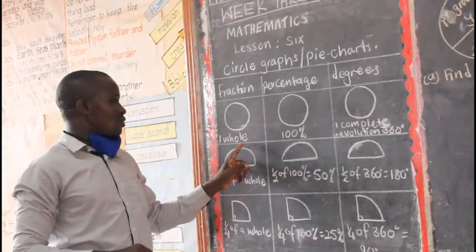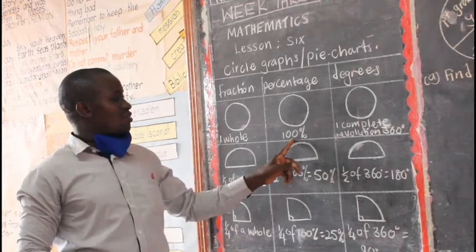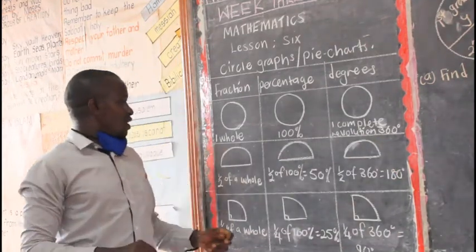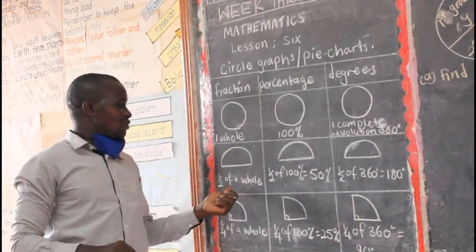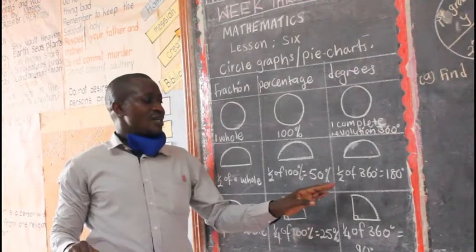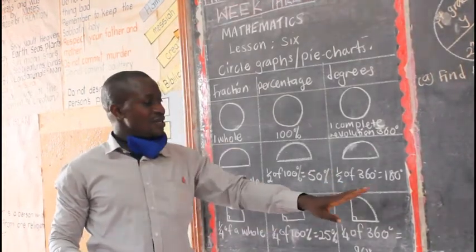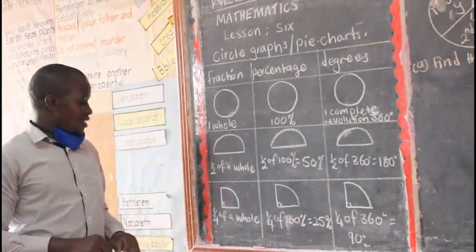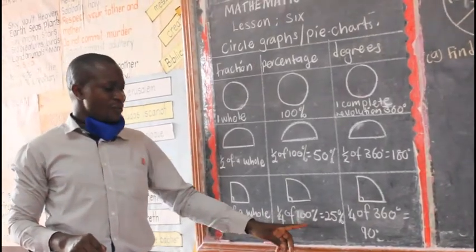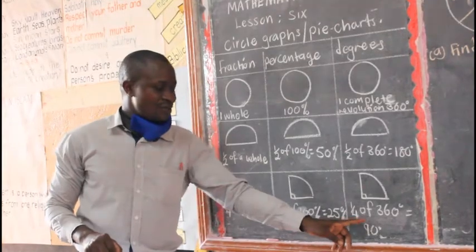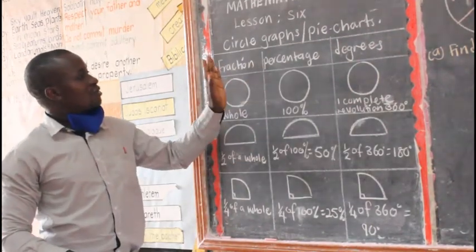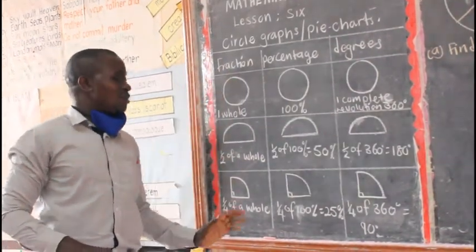A whole circle in terms of percentage is 100%, and in terms of degrees is a complete revolution, which is 360 degrees. A half of the whole: half of 100% is 50%, and half of 360 degrees is 180 degrees. A quarter of the whole: a quarter of 100% is 25%, and a quarter of 360 degrees is 90 degrees. So we can talk about these graphs in terms of a whole, percentages, and degrees.